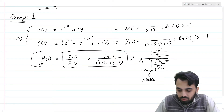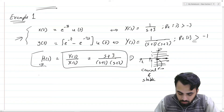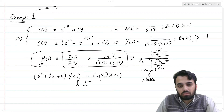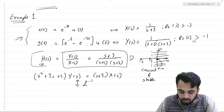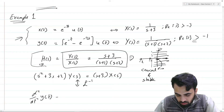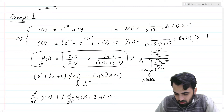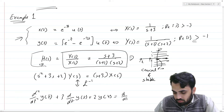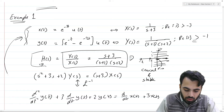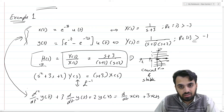Now we can cross-multiply terms to get (s² + 3s + 2)·Y(s) = (s + 3)·X(s). Taking the inverse Laplace transform and using the time differentiation property, this becomes: d²y/dt² + 3·dy/dt + 2y(t) = dx/dt + 3x(t). So given the input and output, we have derived the differential equation using the Laplace transform.